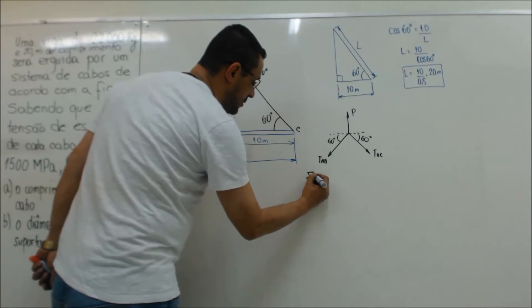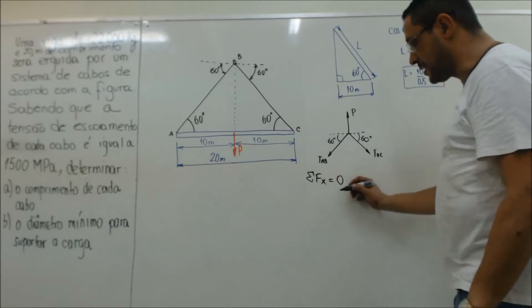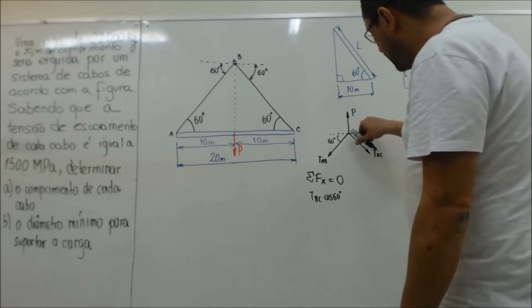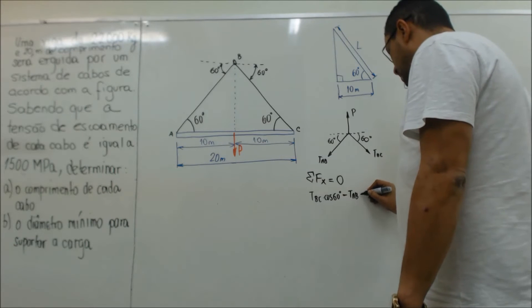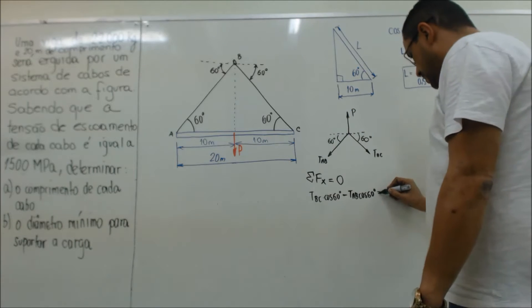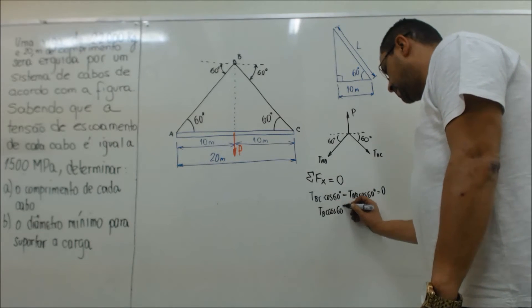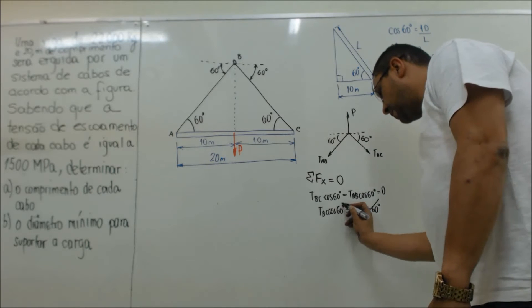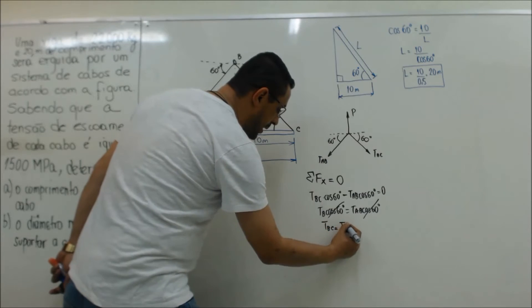Só para comprovar que elas têm um resultado, vou fazer o equilíbrio. Isso daqui é horizontal: soma das forças horizontais igual a zero. Então TBC · cosseno de 60 — força apontando para a direita — menos TAB · cosseno de 60 igual a zero. Então TBC · cosseno de 60 é igual a TAB · cosseno de 60. Como os cossenos são iguais, eu consigo comprovar que TBC é igual a TAB.